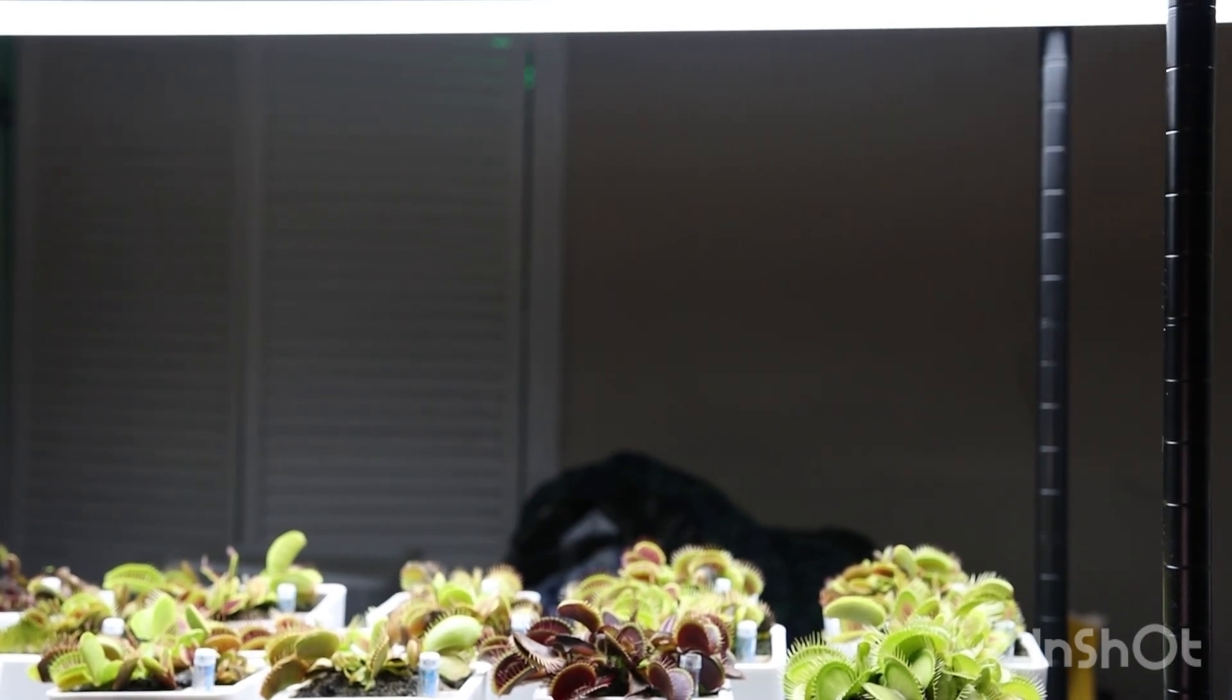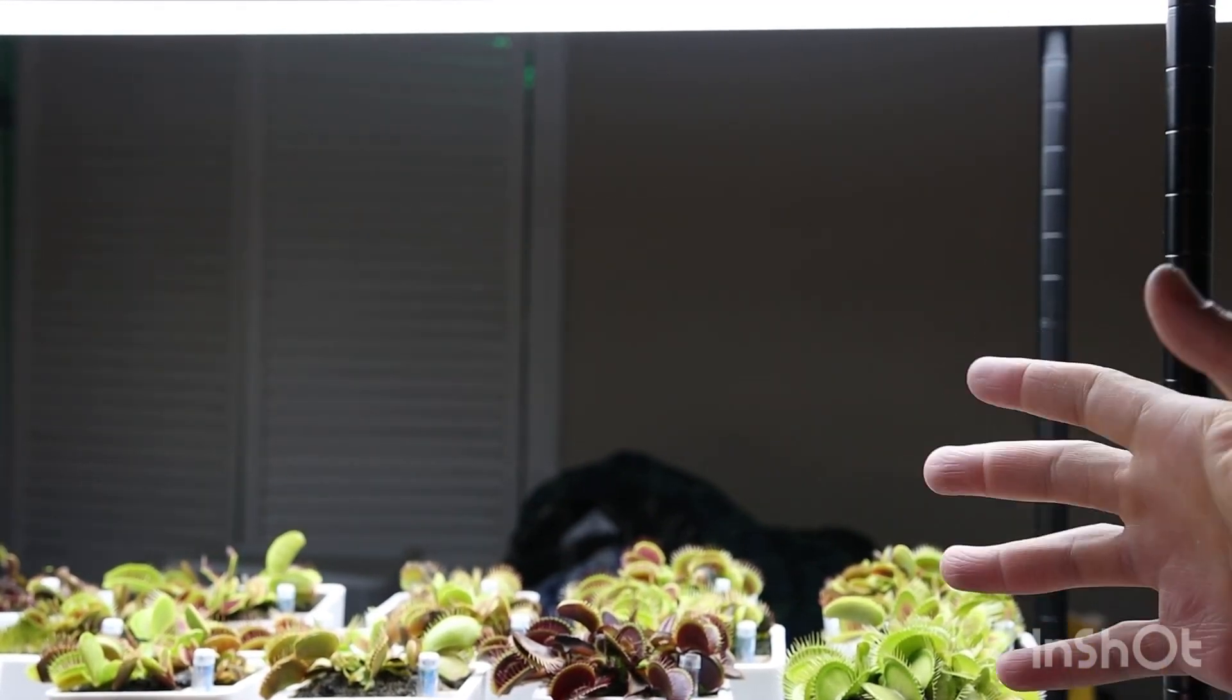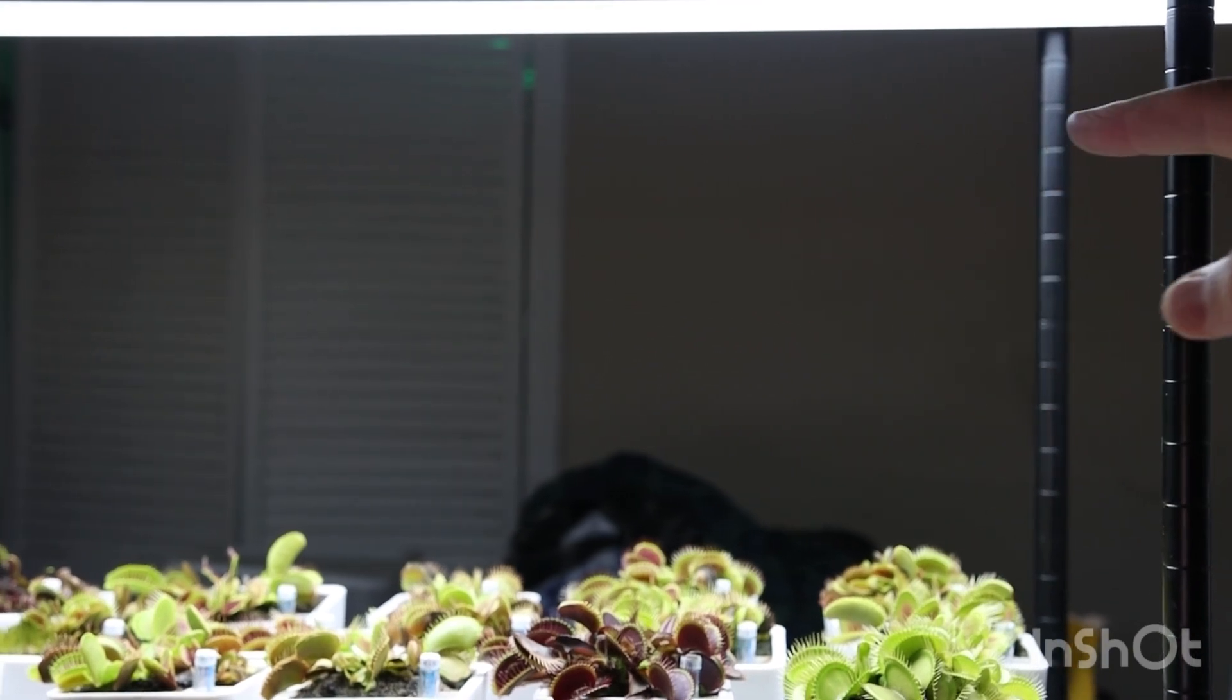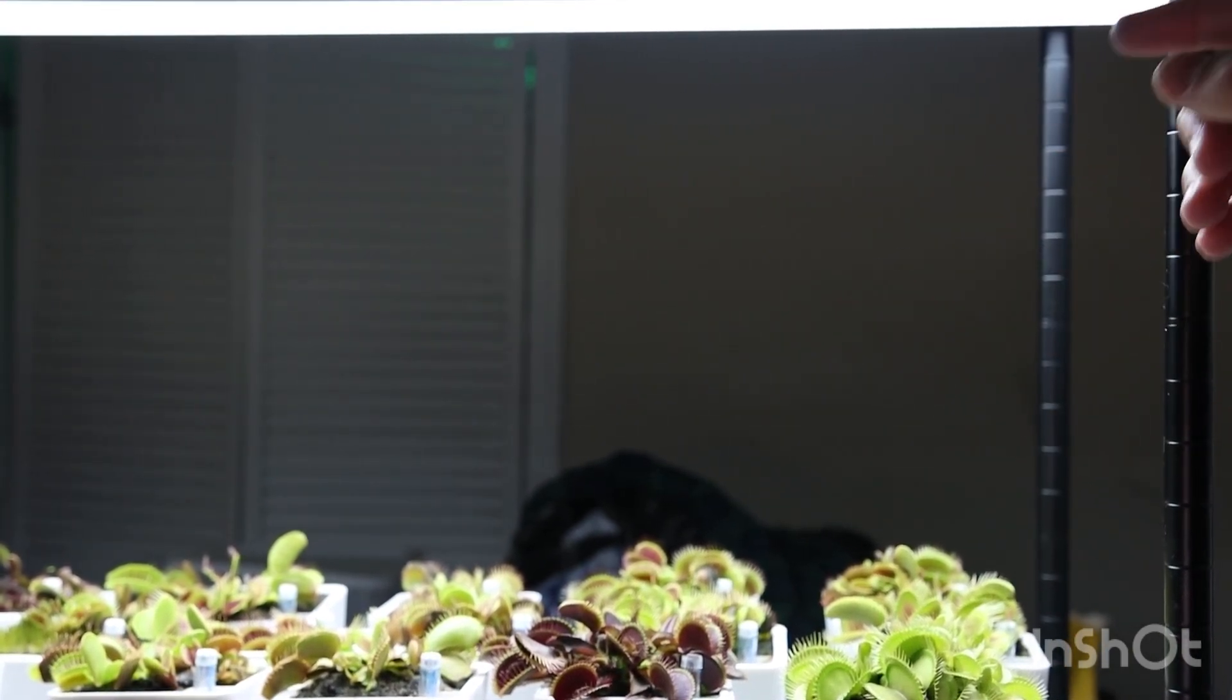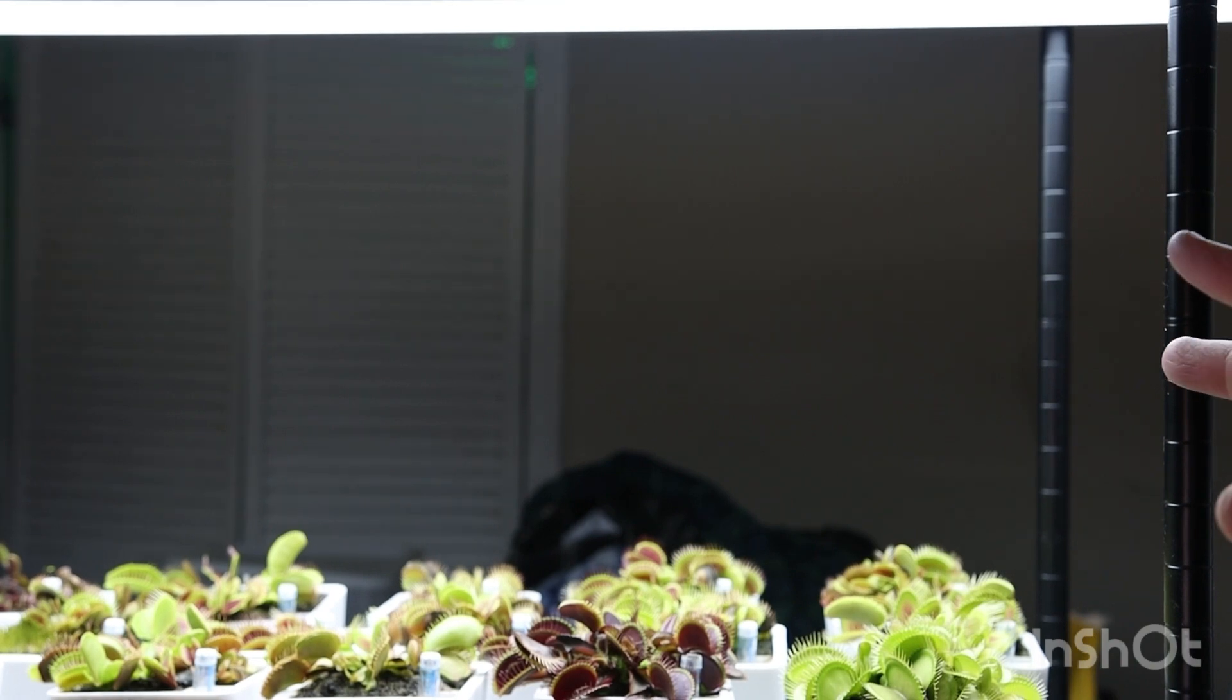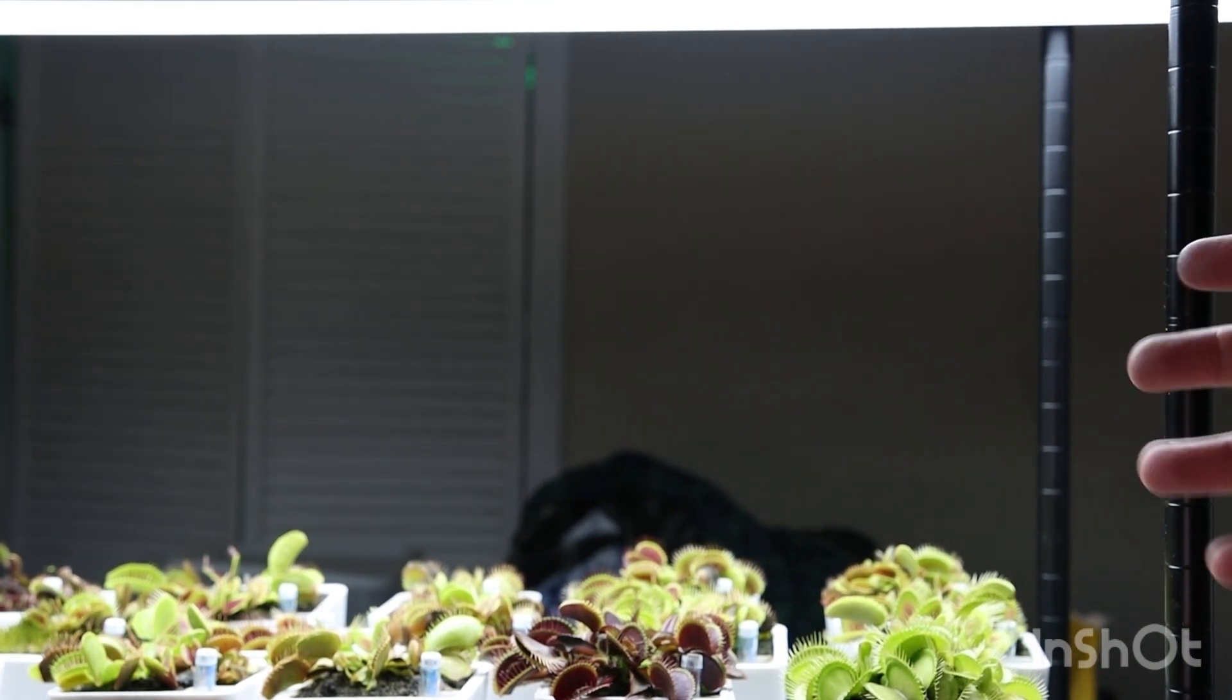As you know, Venus flytraps are direct sun plants. A lot of places will try to convince you that they're partial sun. They are full sun plants. So how do you measure the intensity of the light they are getting per day? It's called the DLI value.